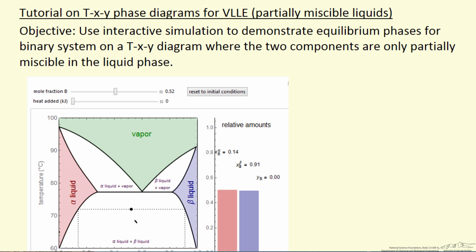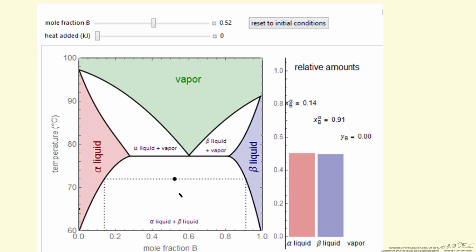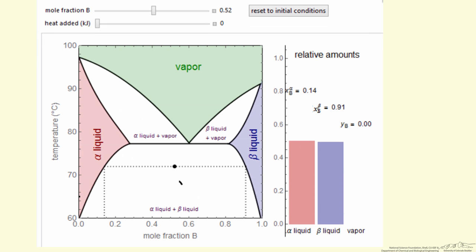In this screencast I'm going to use an interactive simulation to demonstrate what equilibrium phases are present for a binary system on a TXY diagram where the two components are only partially miscible in the liquid phase. What I'm showing here first is what the diagram is going to look like in the interactive simulation.